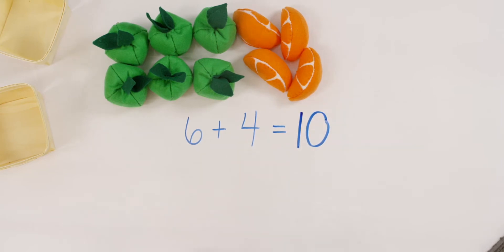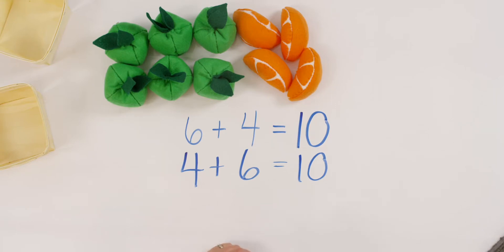Now what's the other addition sentence we can write using the same numbers? You got it. Just the opposite. Four plus six equals ten. Pretty easy, huh? Do you have your two addition sentences written down? Save those and I'm going to tell you a new story and I want you to listen.